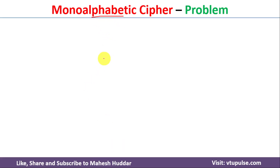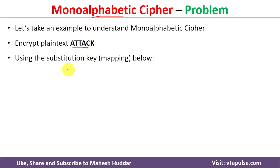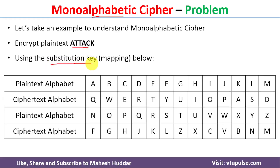To understand monoalphabetic cipher, we take a simple example. We will take the plain text 'ATTACK' and encrypt this message using a substitution key. The top row is the plain text alphabet and the bottom row is the cipher text alphabet. For example, the letter 'A' in plain text is replaced by 'Q', and 'B' is replaced by 'W'. We use this substitution key mapping to find the encrypted message.